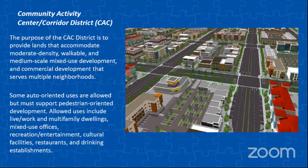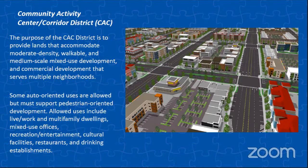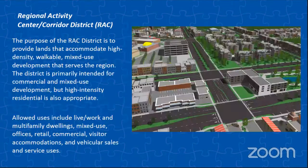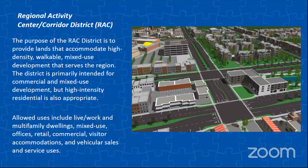Once you go to a bit larger scale, you have your community activity center and corridor district, which might draw from a larger area. Some auto uses are permitted, but they need to still support pedestrian friendly development, still allowing for residential as well as commercial — trying to integrate those uses along the corridor and create a vibrant corridor. Regional activity is just as it says: you will get a larger draw from the region as a whole. You might think of Harbison as something along these lines. It is intended for primarily commercial, with high intensity commercial while still offering the ability for some higher intensity residential as well.